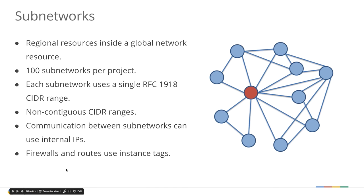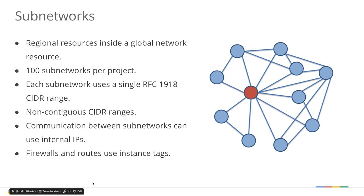Moving to where we are today — you have the ability to create both legacy networks and subnetworks in Google Cloud projects. Subnetworks reside inside a global network resource and you can create 100 subnetworks per project. Each subnetwork can now have a single RFC 1918 CIDR range, instead of a single range across your whole network. Communication between subnetworks can now use internal IP addresses instead of external IPs. We can also group firewalls and routes based on instance tags, which I'll show a bit later.